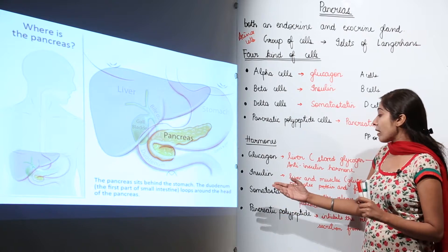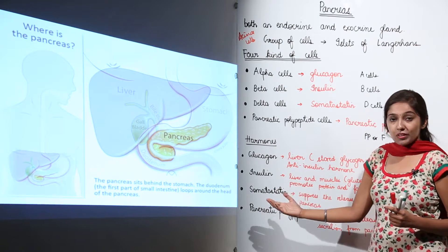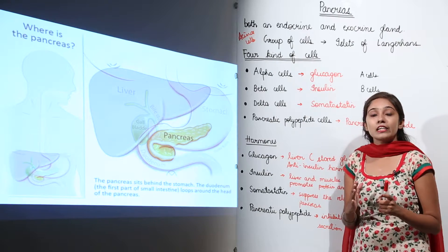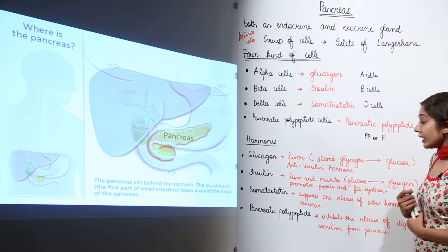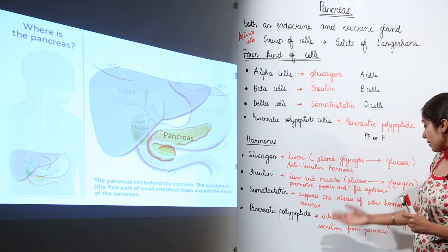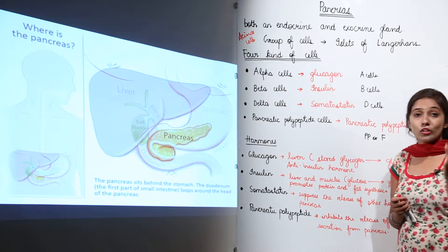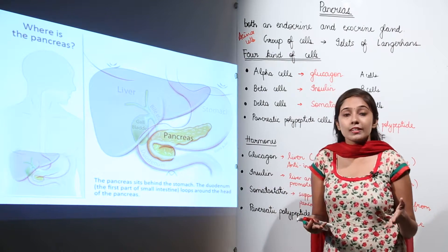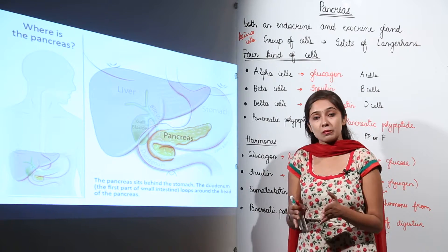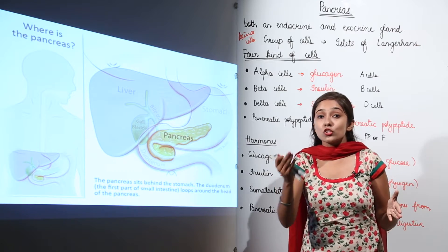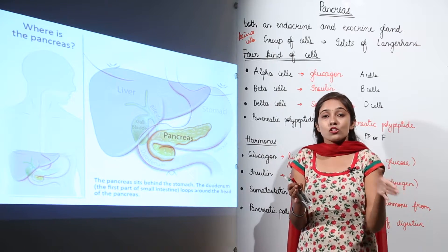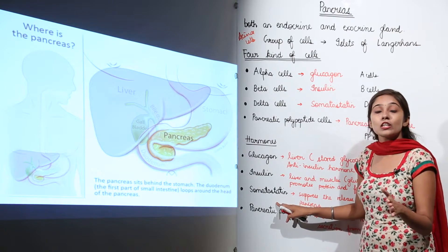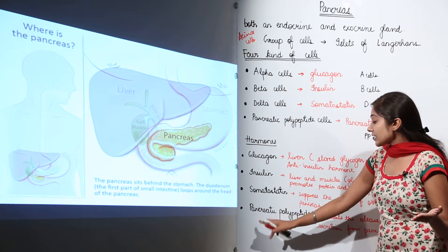Moving on to somatostatin — this hormone suppresses the release of other hormones from the pancreas. Next, we have pancreatic polypeptide, which inhibits the release of digestive secretions from the pancreas. Since the pancreas is a heterocrine gland serving dual purposes, it releases both hormones and digestive juices. So somatostatin suppresses hormone release, and pancreatic polypeptide inhibits digestive secretion from the pancreas.